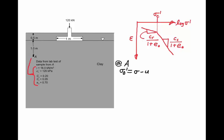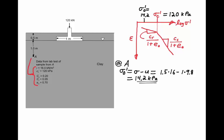At point A, sigma prime zero is going to be equal to the total stress minus the pore pressure. That will be equal to 1.5 meters, the depth of this sample, times the unit weight of the soil, 16, minus 1 meter times the unit weight of water, 9.8. If we do that calculation, we'll find out that the initial effective stress was 14.2 kilopascals. Now we know from the laboratory test that the pre-consolidation stress was 120 kilopascals. Our existing vertical stress is 14.2 kilopascals. Therefore, the soil is over-consolidated.